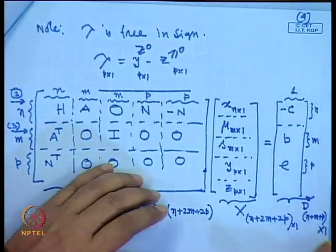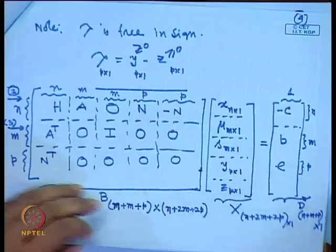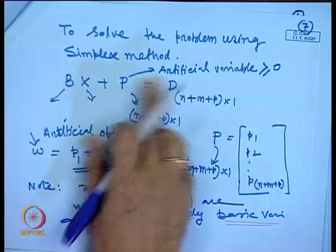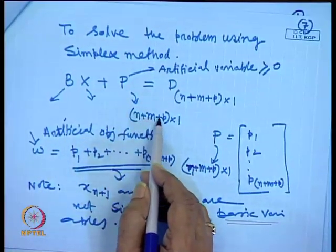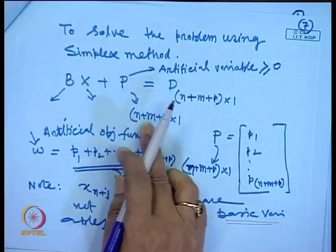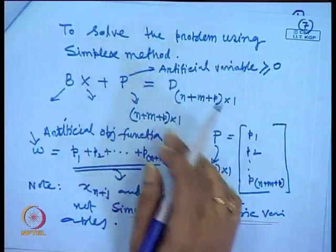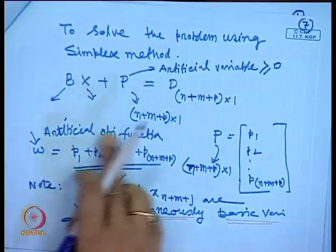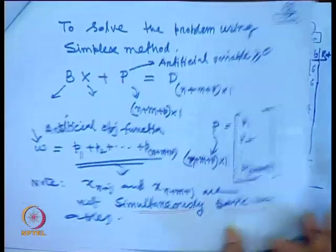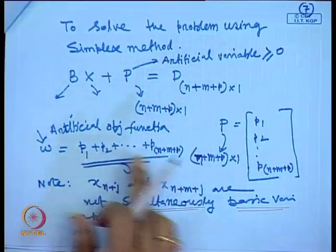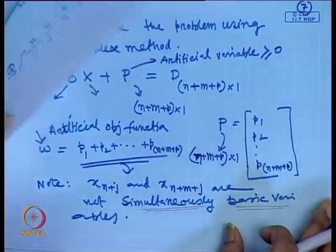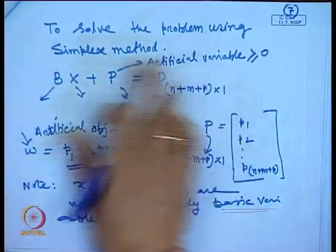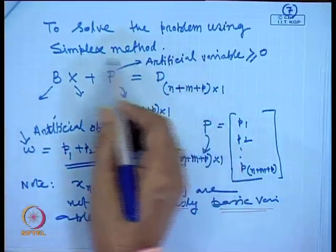We cannot solve B·x = d directly, so we introduce artificial variables p, making the equation B·x + p = d. The vector p has dimension (n + m + p) × 1, so there are n + m + p variables in total. All elements of the artificial variable vector p are summed to form what is called the artificial cost function w. Our problem becomes: minimize this artificial objective function w subject to the constraints, which is now a standard LP problem.